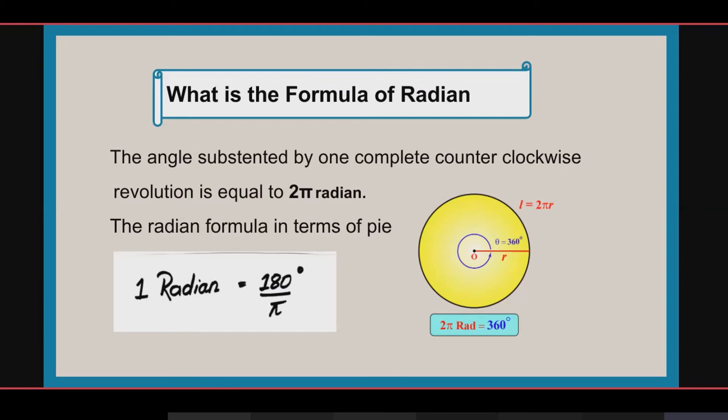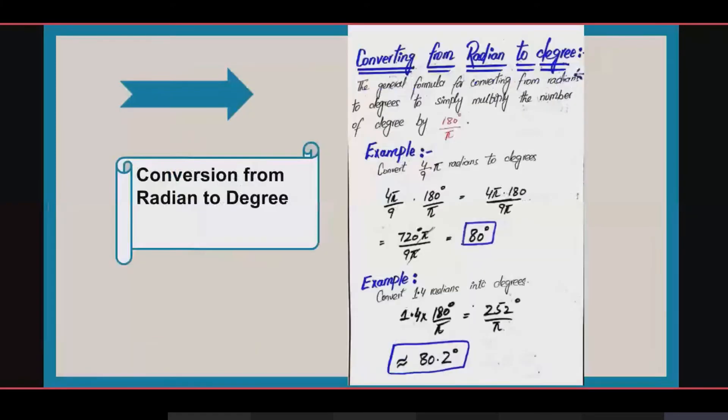One complete counterclockwise revolution is equal to 2π radians, which is equal to 6.28 radians. This is because the circumference of a circle is equal to 2πr, and when divided by the radius r, we get 2π, which equals 6.28 radians.